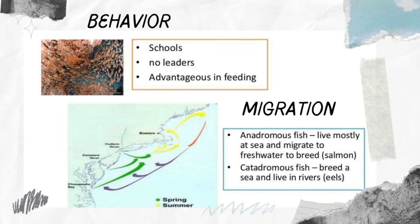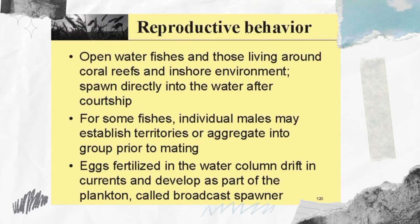In terms of migration, some bony fish species are diadromous, meaning they migrate between fresh and marine environments. Some are catadromous — they live in freshwater environments but migrate down river to the ocean to spawn. Anadromous fishes live most of their lives in the ocean but migrate into freshwater environments to spawn. The most common example of anadromous fishes are salmon.